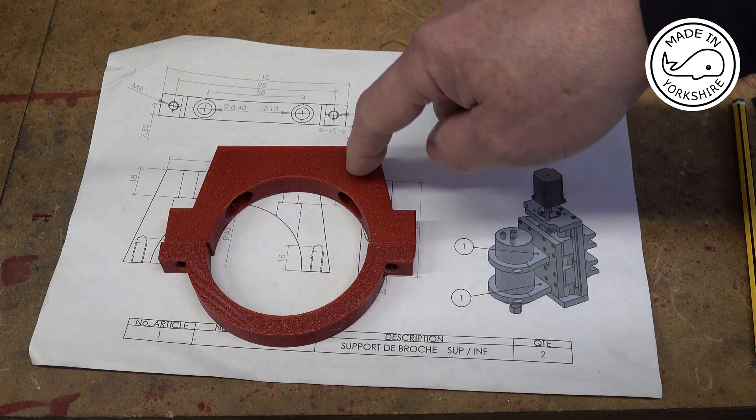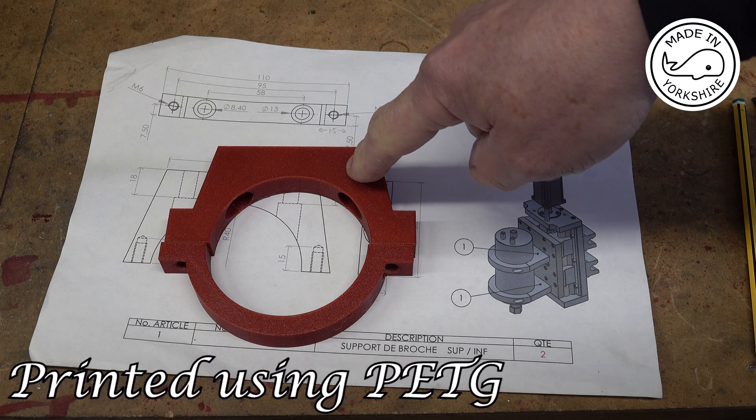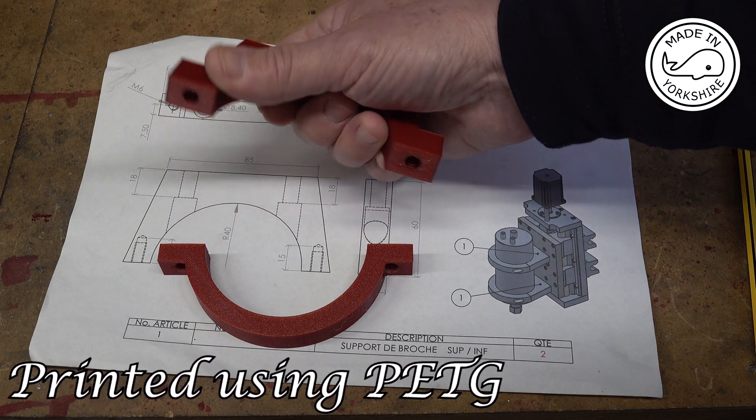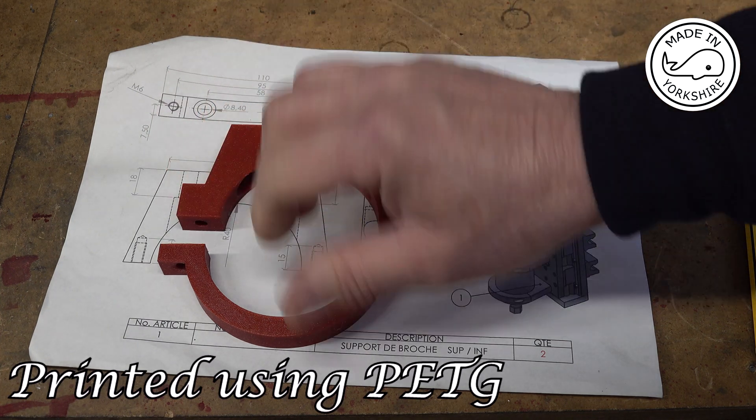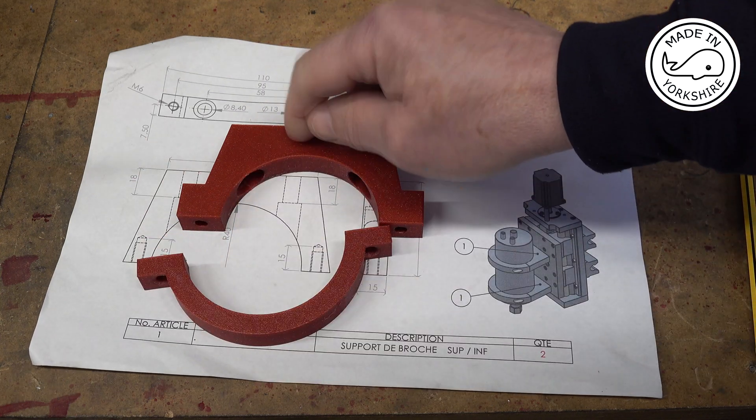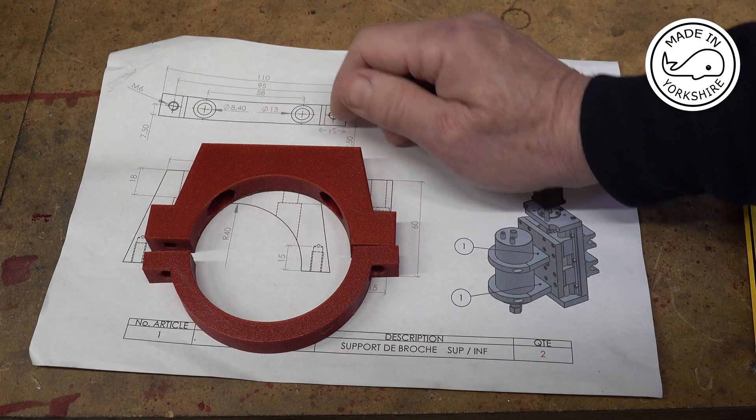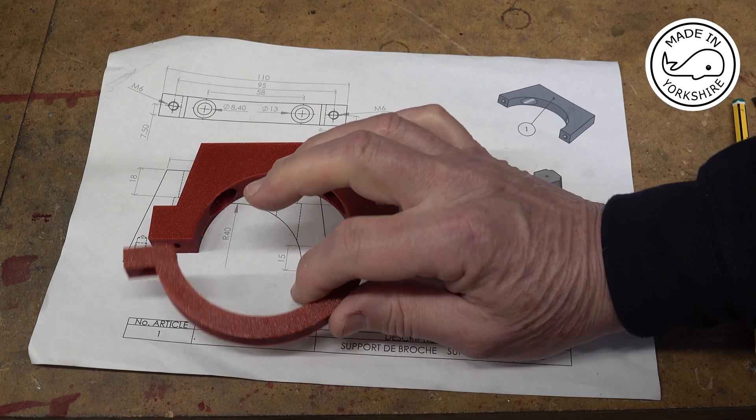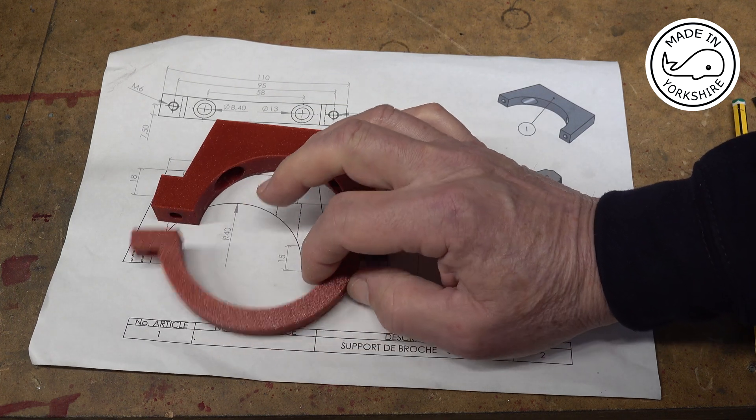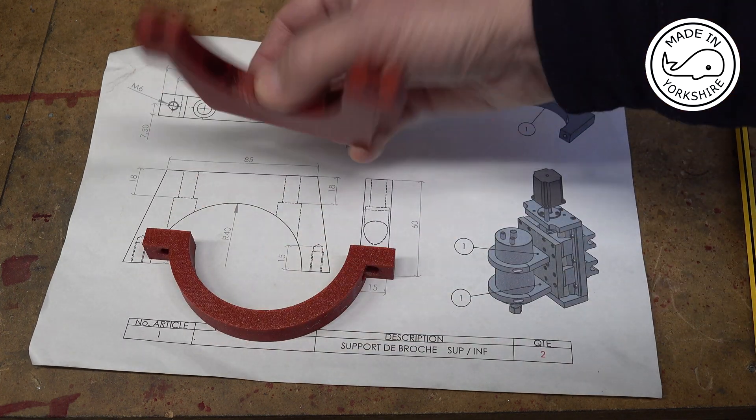Now that is, I printed that at 50% fill and it's very very rigid. Both pieces are. That took 5 hours to print, just over about 5 and a half I think. I think that took probably 2 or 3 hours. But really good result.